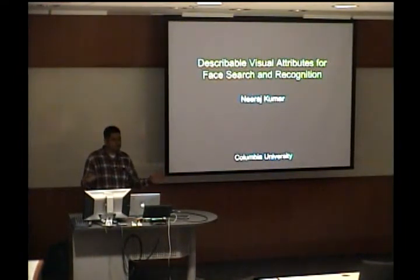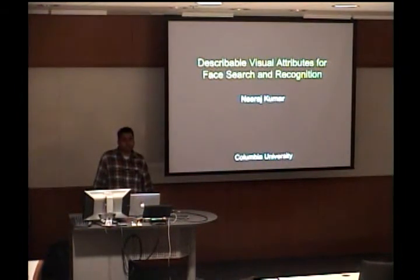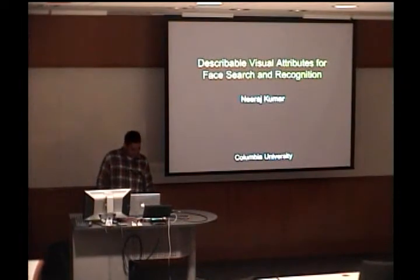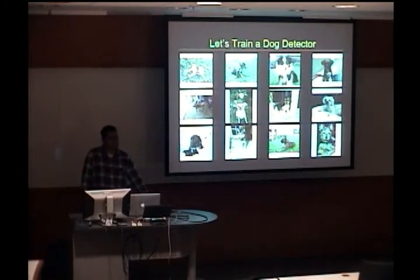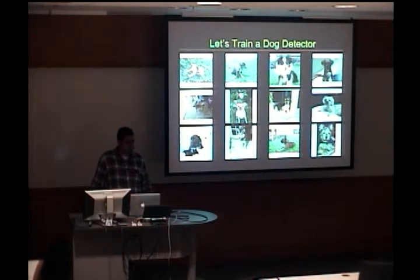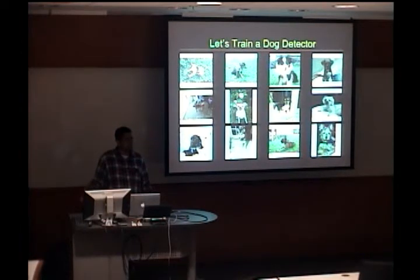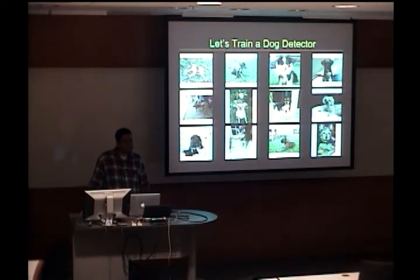I know you're probably not all face people, but this isn't going to be just faces, although it is primarily faces. Let's start with dogs. Say we want to train a detector to recognize dogs in images. If you look at these images of dogs, you see that there's a lot of variation in the way that dogs appear, because there are different types of dogs, and they're photographed in all different conditions. So it's very tough to build a classifier that can reliably find dogs in images.